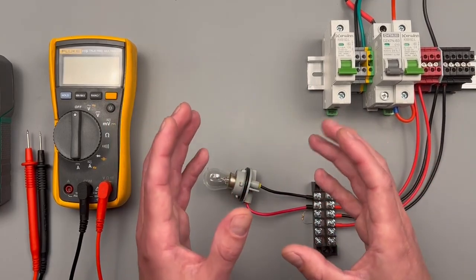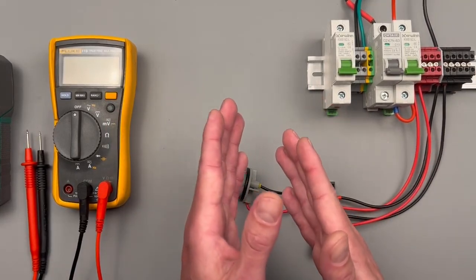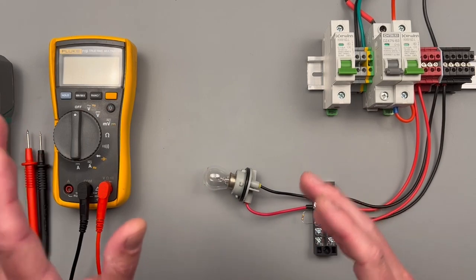Today we're going to be covering how to measure direct current voltage and amperage using a multimeter.